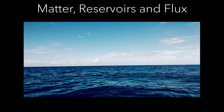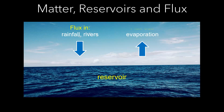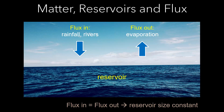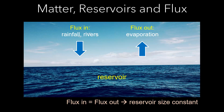We'll describe a simplified example of the oceans as a reservoir. Water circulates into the oceans from various sources, including rainfall and rivers. Water flows out by evaporation to the atmosphere. As long as the rate of water leaving the system is balanced with the rate of water entering the system, the size of the reservoir remains the same and sea level doesn't change.